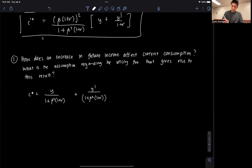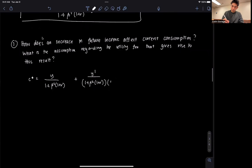And I can simplify that as y over 1 plus beta squared times 1 plus r, plus y prime over 1 plus r plus beta squared times 1 plus r squared.